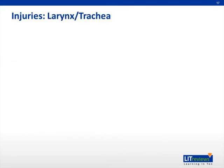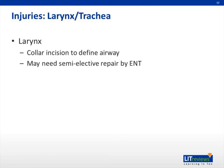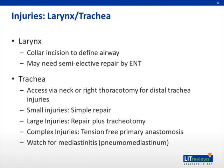Injuries to the larynx, trachea, or airway are also very important. If laryngeal injury is suspected, a collar incision can help to define the airway, followed by semi-elective repair by ENT. With all these scenarios, securement of the airway is of the essence. If the trachea has been injured, the injury can be assessed via the neck, through a right thoracotomy if the injury is distal, or through endoscopic measures. For small injuries, simple repair is indicated. For large injuries, repair plus a tracheotomy may be appropriate. For very complex injuries, tension-free primary anastomosis is indicated. Concern for pneumomediastinitis should be observed given the potential for tracking through the airway into the mediastinum, commonly preceded by pneumomediastinum on chest x-ray.